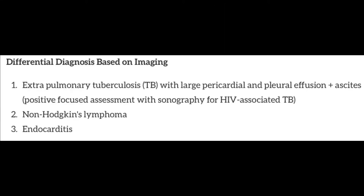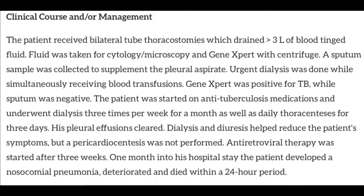Here was the authors' refined differential diagnosis after the point-of-care ultrasound. This is a real case, so this is what really happened: the patient received bilateral tube thoracostomies, which drained greater than three liters of bloody-tinged fluid. Fluid was taken for cytology, microscopy, and GeneXpert with centrifuge — a test for tuberculosis. A sputum sample was also collected. Urgent dialysis was done while simultaneously receiving blood transfusions. GeneXpert was positive for tuberculosis while sputum was negative. The patient was started on anti-tuberculosis medications, underwent dialysis three times per week for a month, as well as daily thoracentesis for three days. His pleural effusion cleared. Dialysis and diuresis helped reduce symptoms, but a pericardiocentesis was never performed. Antiretroviral therapy was started after three weeks. One month into the hospital stay, the patient developed a nosocomial pneumonia, deteriorated, and died within 24 hours.